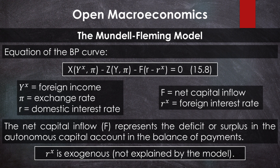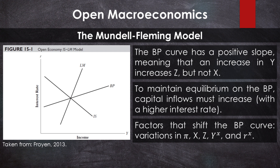Let's consider the foreign interest rate as exogenous. For didactic purposes, we will also not include the foreign interest rate in the money demand function, even though investors choose between foreign and domestic bonds based on their returns. Thus, the demand for money will depend only on the domestic interest rate. As shown in figure 15.1, the BP curve has a positive slope. This means that when the income level rises, the demand for imports also increases, but the demand for exports does not. As a result, to maintain balance of payments equilibrium, capital inflows need to increase, which will occur with a higher interest rate.